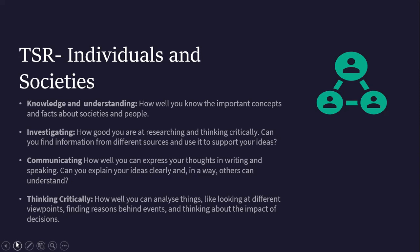Criterion C is about communicating — how well you can express your thoughts in writing and speaking. Can you explain your ideas clearly in a way others can understand? Specifically this year, we're going to integrate Criterion B and C together. If you are going to create an investigation and a report, you will then communicate your report by presenting a PowerPoint presentation that is reflective of your findings. The ability to communicate your message clearly will be based on a guideline I shall provide in terms of how you divide your slides to ensure the message is cohesive and coherent.